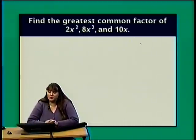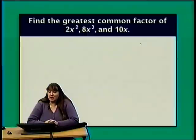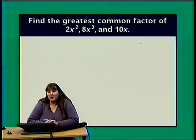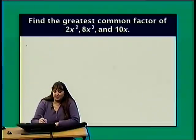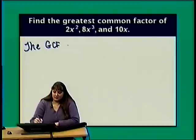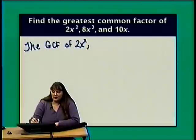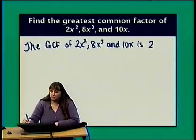Now let's find the GCF of 2x squared, 8x cubed, and 10x. We have integers as well as powers of x. I can do this one in my head: 2, 8, and 10 have a GCF of 2. Then looking at the powers of x, I look for the smallest exponent — there's an implied exponent of 1 on x in the term 10x. So the GCF is 2x.